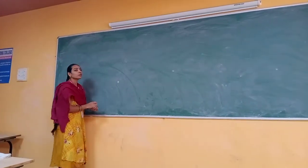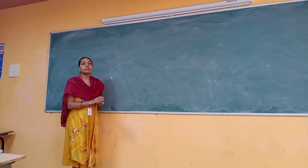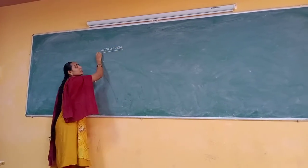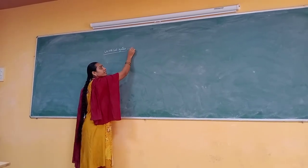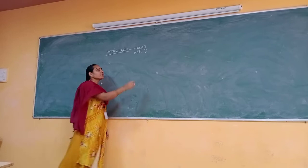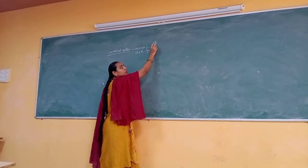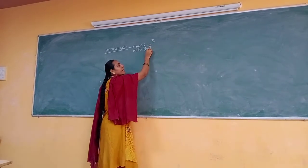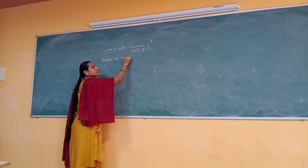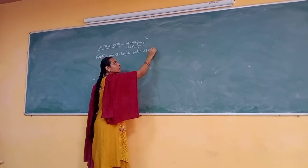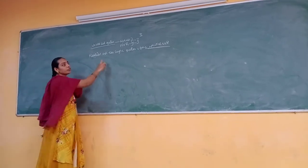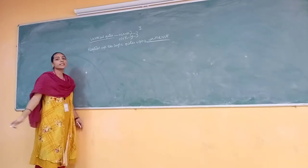We have discussed all the logic gates. Today we are going to discuss the universal gates. We have two universal gates: one is NAND and another one is NOR. By using NAND and NOR, we can realize all seven basic logic gates. So that's why they are called universal gates. We will see how to realize all the logic gates using NAND and NOR.